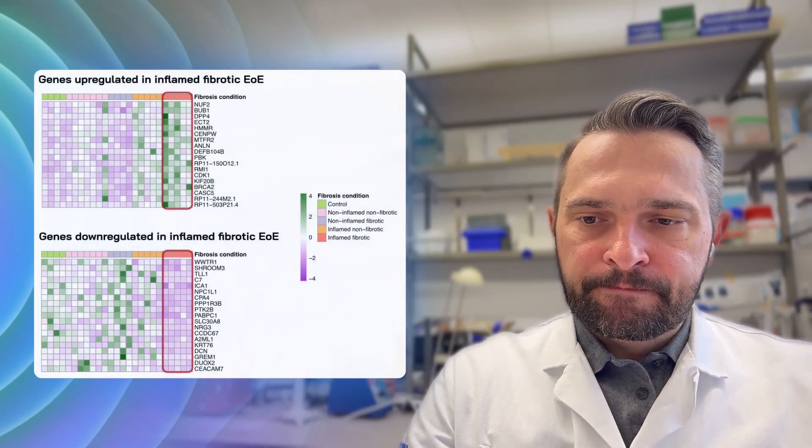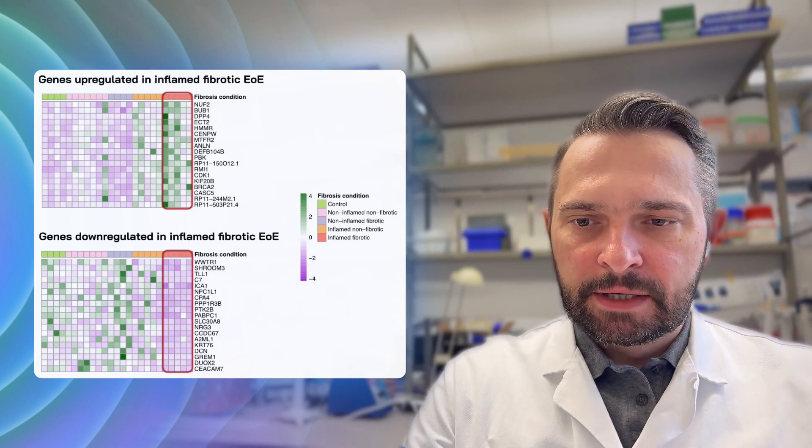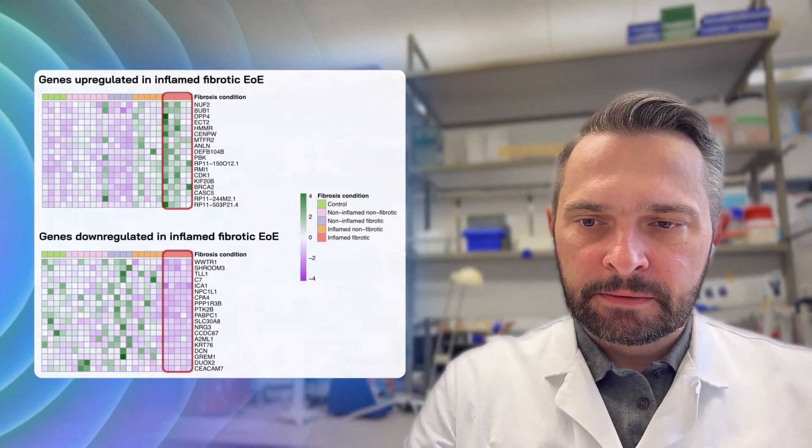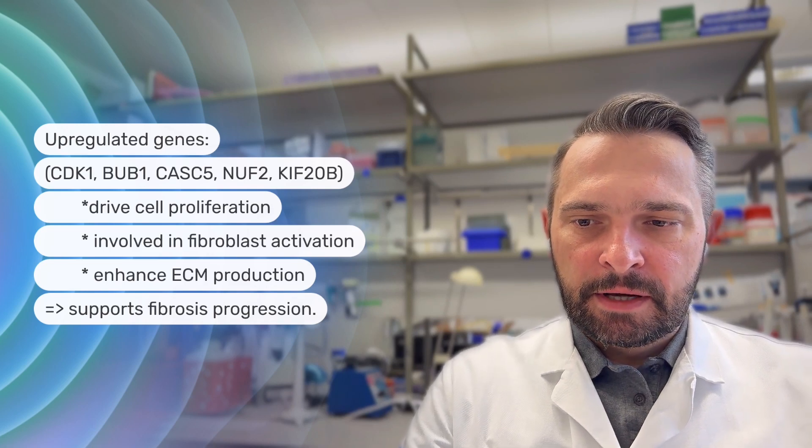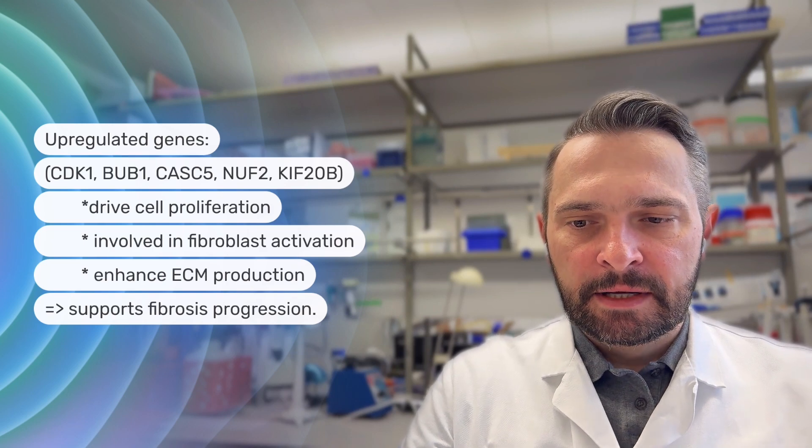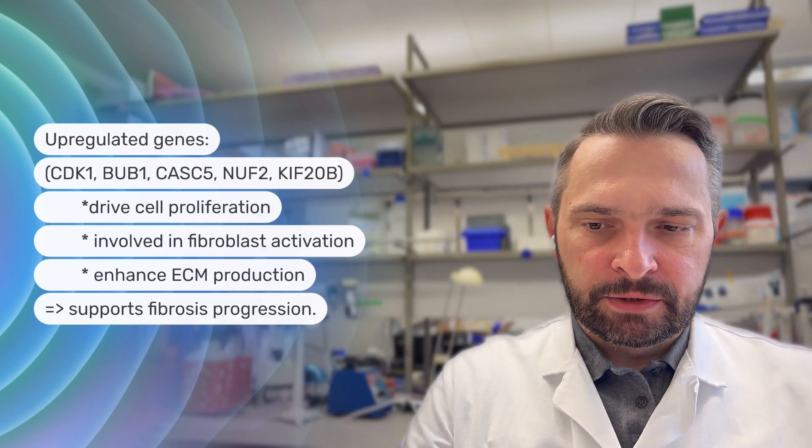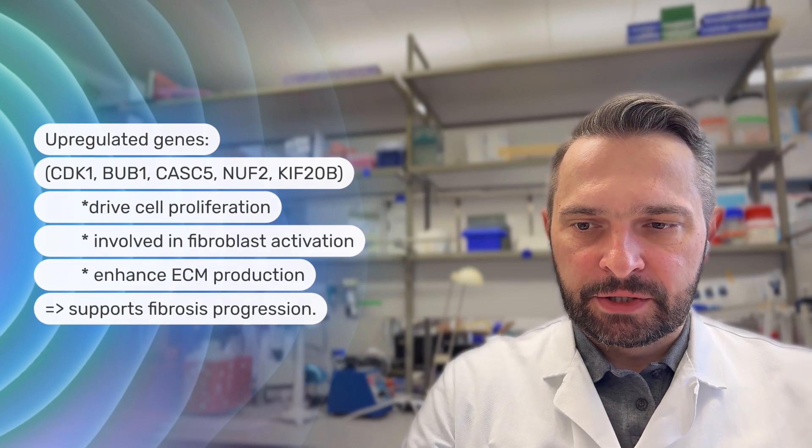Here you can see the heat maps for genes upregulated and downregulated in inflamed fibrotic tissues. The upregulated genes are known to drive cell proliferation, they are involved in fibroblast activation, and they enhance extracellular matrix production. This in turn might support fibrosis progression.